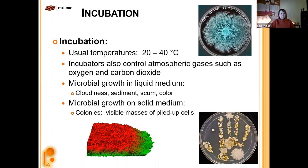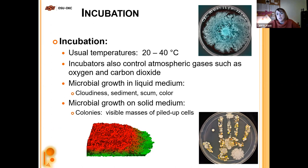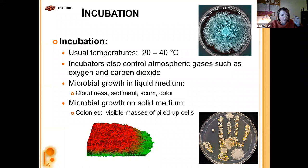Next is incubation. When trying to grow microorganisms, you take a sample — from the bottom of your shoe or the back of your throat if you're sick. The usual temperatures for most things we're sampling is 20 to 40 degrees Celsius — approximately room temperature up to a little higher than body temperature. Bacteria that grow in this range are called mesophiles, referring to that middle temperature range.